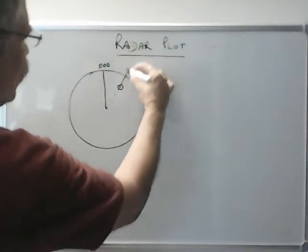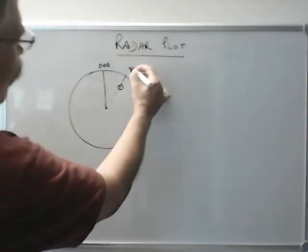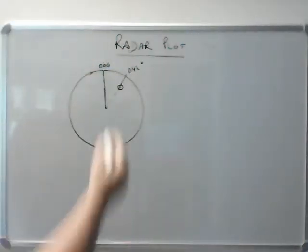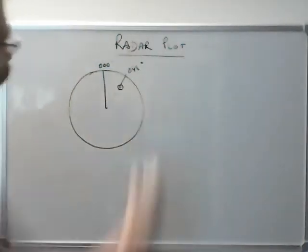One is its bearing, which you can measure from the electronic bearing line, let's say 045. And the other is its distance, which you can measure from variable range marker.